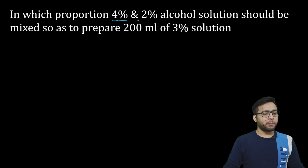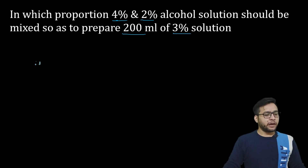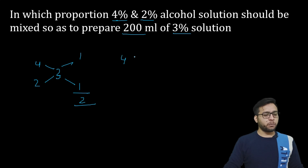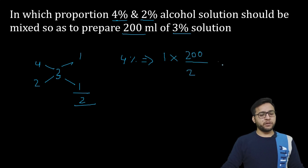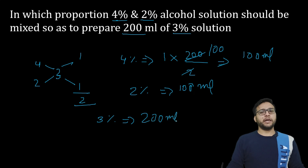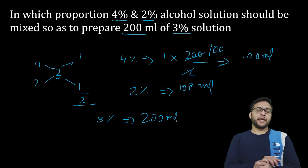यहाँ पर दिया गया है: 4% और 2% दिया गया है, और हमें बनाना है 200 ml का 3% solution। सबसे पहले जो given है वो लिखेंगे, फिर जो required है — 3% required है। इसी तरीके से same simple — यह 2 हो जाएगा। 4% का 1 upon 2, total 200 ml बनाना है — तो यह 100 ml आ गया 4% का। और ऐसे ही 2% का भी हमें 100 ml आ जाएगा — 3% का 200 ml बन चुका है: 100 ml लेंगे 4% का और 100 ml लेंगे 2% का।